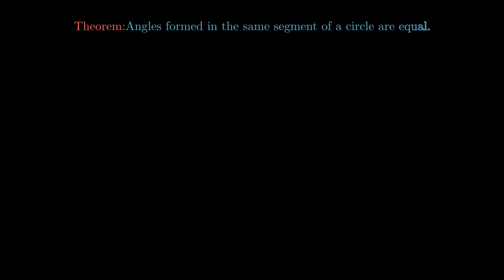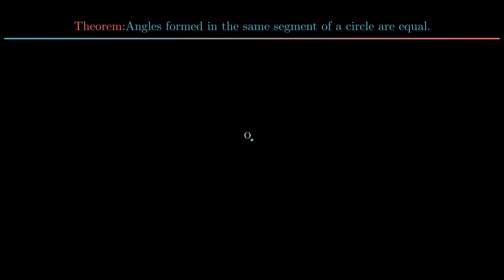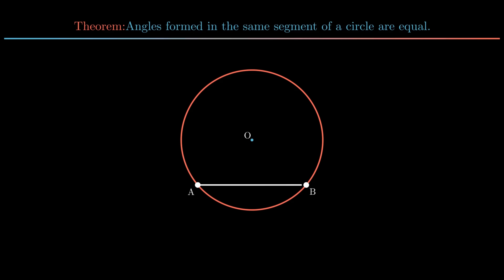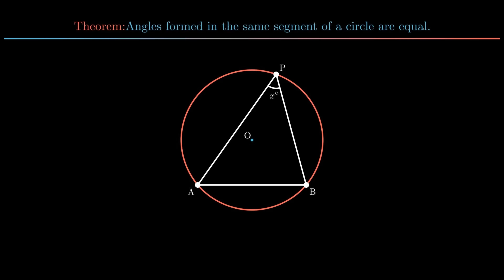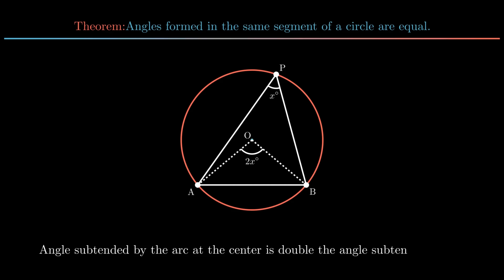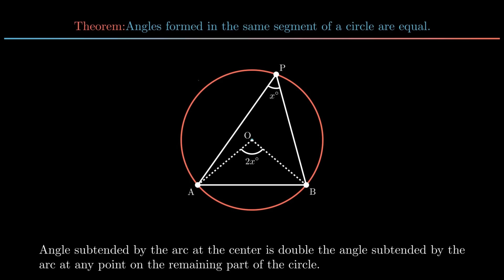Moving on to the next theorem: angles formed in the same segment of a circle are equal. Consider a circle with center O. Join points A and B of the circle, resulting in the formation of a minor segment and major segment. Consider any point P on the circle such that angle APB equals X. Join the endpoints of line segment AB with center O, resulting in the formation of angle AOB equal to 2X, as the angle subtended by the arc at the center is double the angle subtended at any point on the remaining part of the circle.